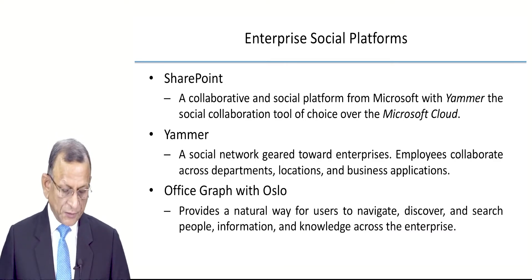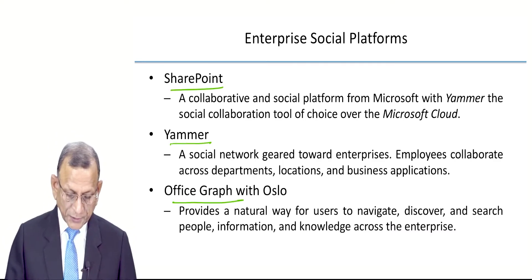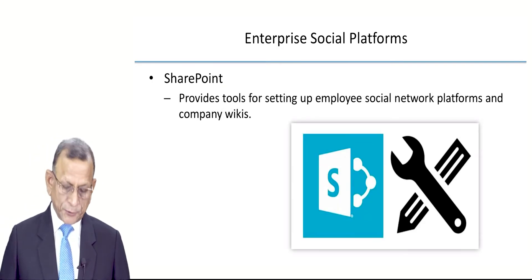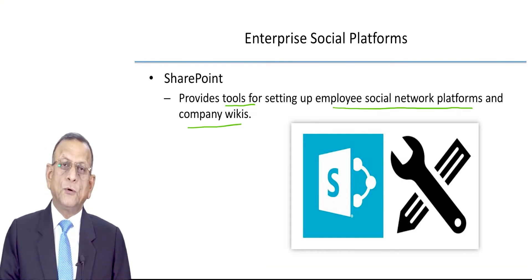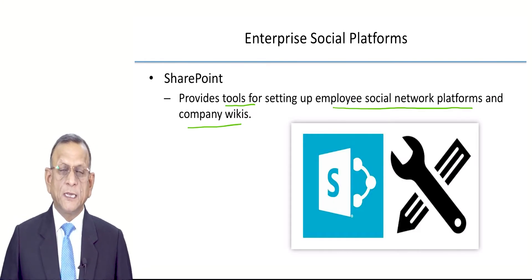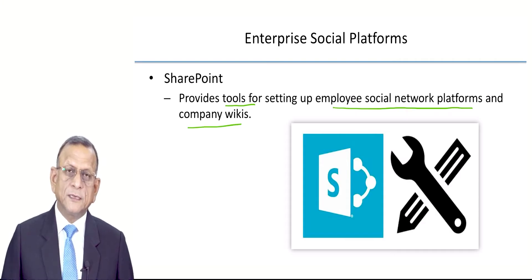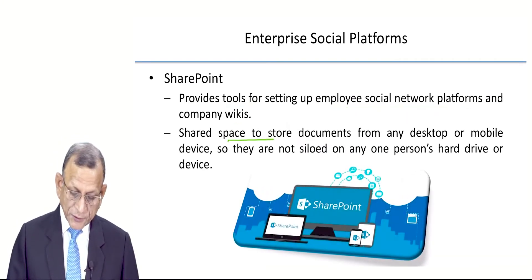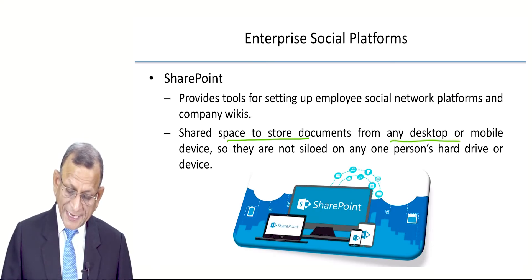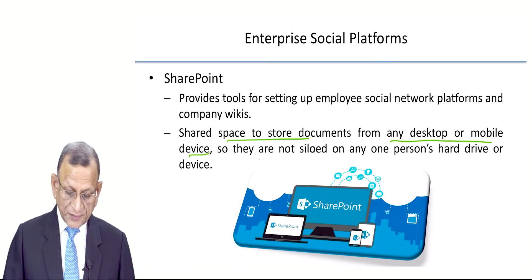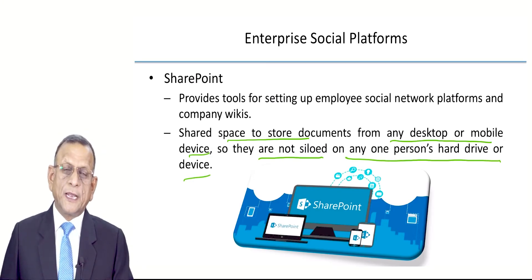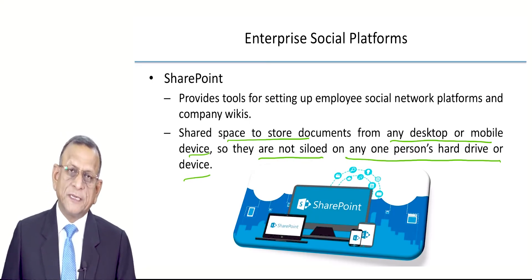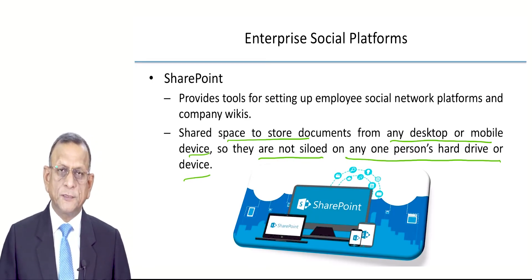We have three solutions: SharePoint, Yammer, and Office Graph with Oslo. SharePoint provides tools for setting up employee social network platforms and company wikis — you can have your own Wikipedia accessible by company members only. It provides shared space to store documents from any desktop or mobile device so that they are not siloed on any person's hard drive or device, but available to everybody.